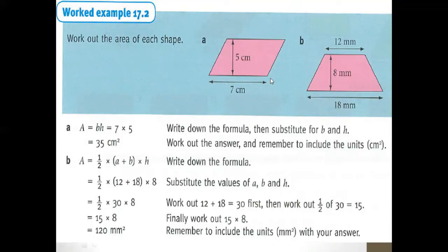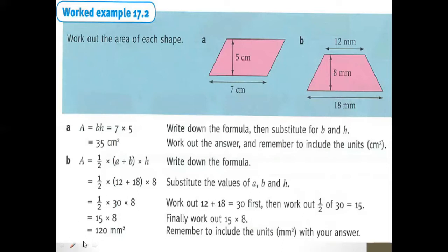For the area of a Parallelogram, you simply multiply: 5 multiplied by 7 equals 35, so you write 35 centimeters squared. In the case of a Trapezium, you add the two bases: 12 plus 18 equals 30, then 30 multiplied by 8 equals 240 millimeters, divided by 2, which gives 120.